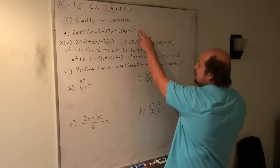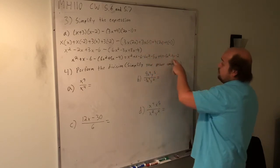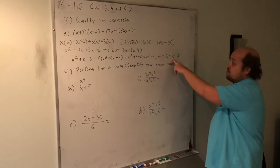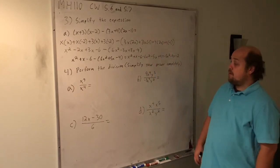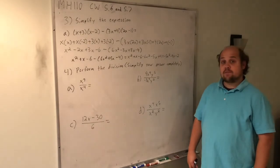So I started with the original expression and ended with the final answer: negative 5x squared minus 4x minus 2.